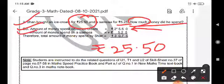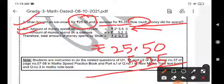Then, you are going to write amount of money spent on samosa. What it is? You have to write 5.25. So, you have to write the digits according to the dots. Dot should be one below the other. So, when you add zero plus five is five. Then, five plus two is seven. Five plus five is...